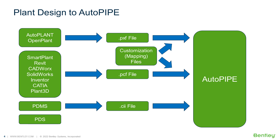Aviva PDMS has a module called PDMS Stress C, which generates a Caesar neutral file, or a .cii file. And AutoPipe has a translator to convert this .cii file into an AutoPipe neutral file.